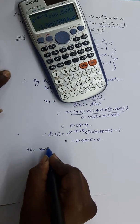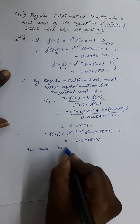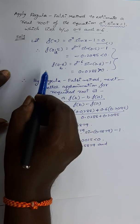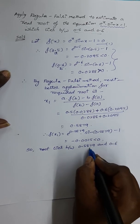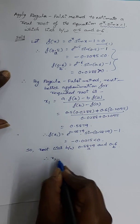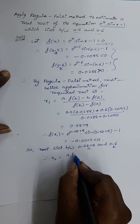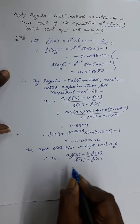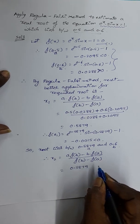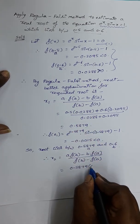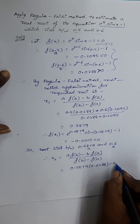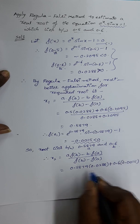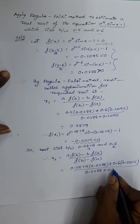So the root lies between 0.5879 and 0.6, since f(0.5879) is negative and f(0.6) = 0.0288 is positive. Take a = 0.5879 and b = 0.6. Now calculate x2, the second better approximation, using the same formula: [a · f(b) − b · f(a)] / [f(b) − f(a)]. Substituting: a = 0.5879, f(b) = 0.0288, b = 0.6, f(a) = −0.0015, giving [0.0288 + 0.0015] in the denominator.